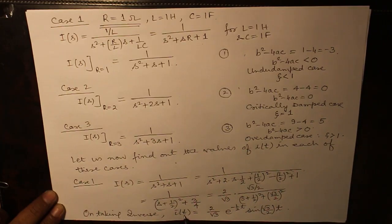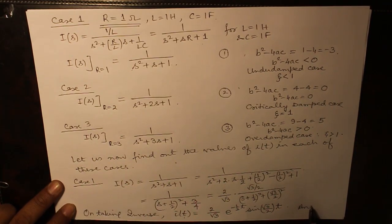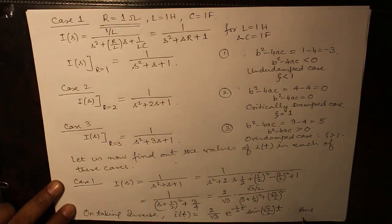So, taking inverse I(t) is giving you 2 over √3 e raised to the power minus half t which has come because of s plus half and sine of √3/2 t. This has come because the Laplace inverse of ωN divided by s² plus ωN² is sine of ωt. So, this is the answer for case 1 that is underdamped case.